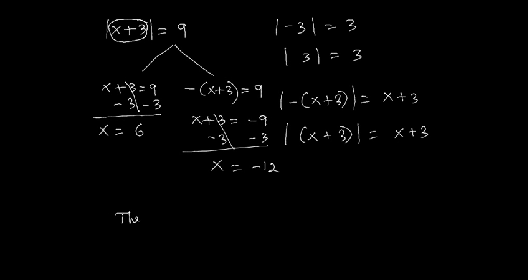Finally, the solution is x equals 6 and x equals negative 12. I hope students now understand why we take positive sign and negative sign on the right side value when solving an absolute value equation. For more videos like this, please visit www.onlinemathforall.com. Thank you.